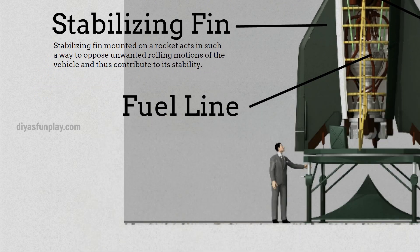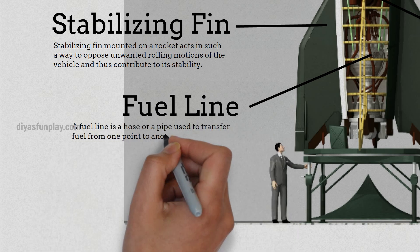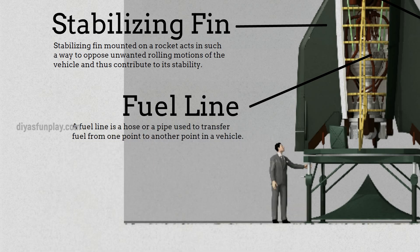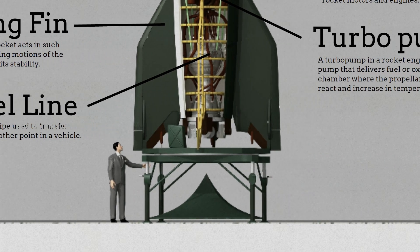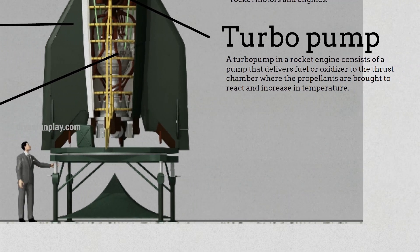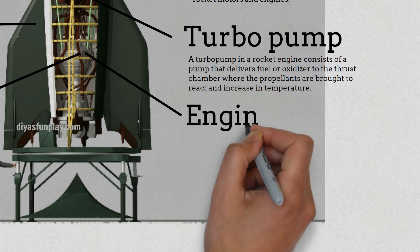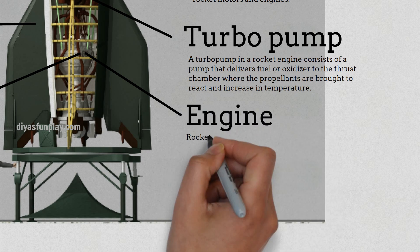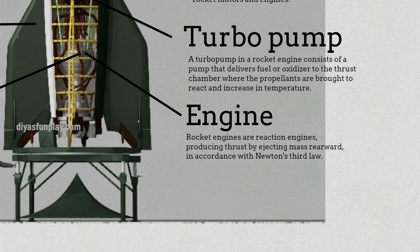Fuel line. A fuel line is a hose or pipe used to transfer fuel from one point to another point in a vehicle. Engine. Rocket engines are reaction engines, producing thrust by ejecting mass rearward, in accordance with Newton's third law.